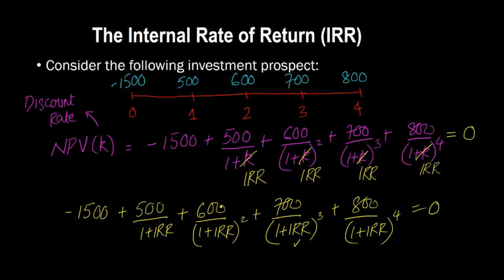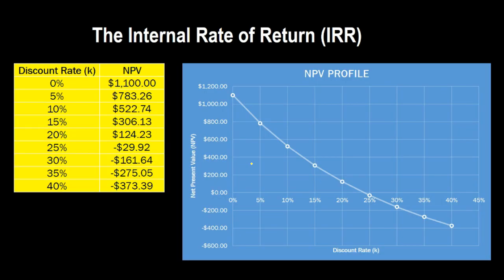With the trial and error method, you start plugging in different values of K and see how the NPV responds. If you're getting a positive NPV for a certain discount rate, you increase K so that NPV gets lower and lower until you get it to drop down to zero. If you start plugging in different values of the discount rate, you will get different values for NPV.